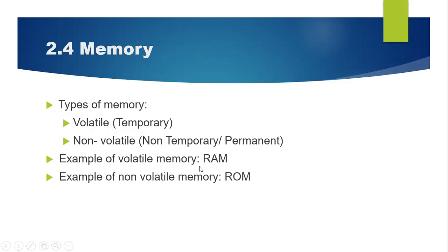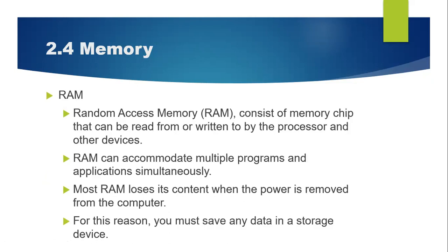Beza RAM dengan ROM: RAM ni dia menyimpan memori secara sementara, ROM tu adalah non-volatile ataupun menyimpan memori secara kekal — Read Only Memory. RAM ni adalah singkatan kepada Random Access Memory. Consists of memory chips that can be read from or written by the processor and other devices. RAM can accommodate multiple programs — RAM boleh menjalankan banyak program dalam satu masa. Sebab tu penting bila kita pilih PC ataupun laptop, RAM tu kena besar. Kalau RAM tu kecik, so kita tak boleh nak buka banyak-banyak software dalam satu masa. Sebab tu kita pilih 8GB RAM, 16GB RAM contohnya.